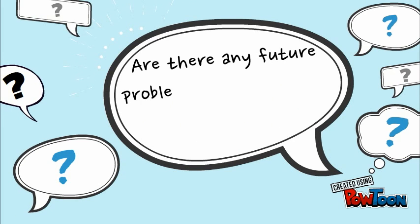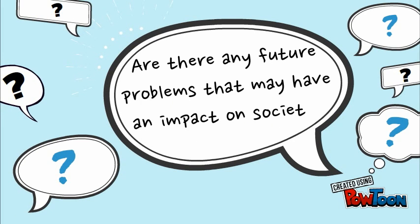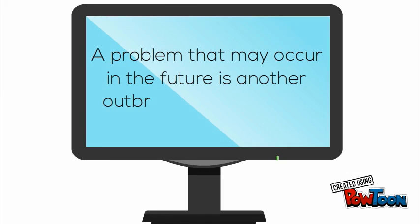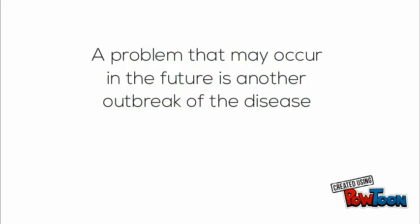Are there any future problems that may have an impact on society? A problem that may occur in the future is another outbreak of the disease. For example, when an epidemic of the disease occurred in 1489 in Granada, Spain.